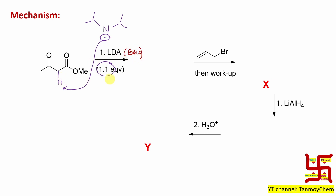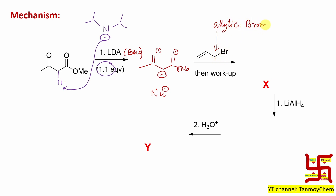LDA abstracts this proton and generates the carbanion. The resonance stability of this carbanion I have already discussed. Now this carbanion can act as a nucleophile because the carbon center is softer in nature and is a better nucleophile. This position being attacked is also called the allylic position — it is allyl bromide. Allylic substances are more active for both SN1 and SN2. Actually, there are few molecules that can perform SN1 and SN2 both efficiently.